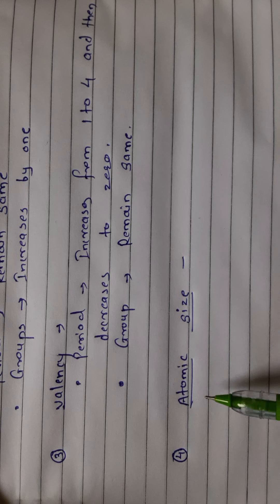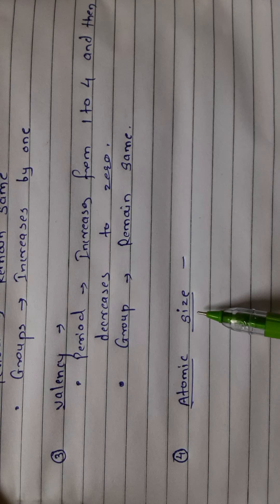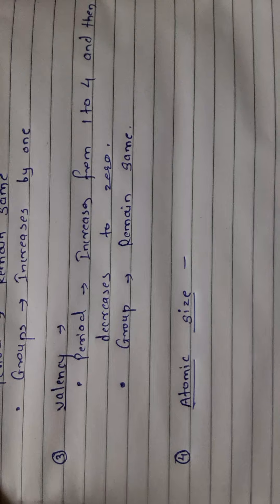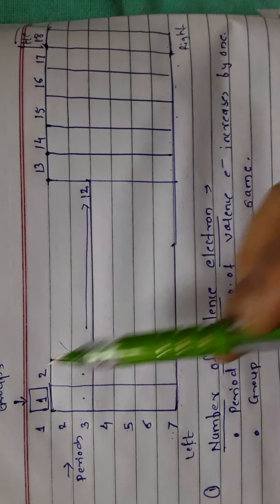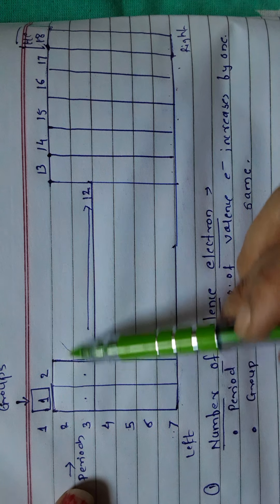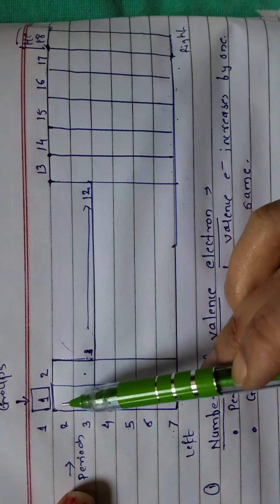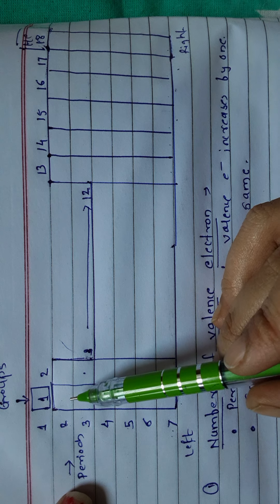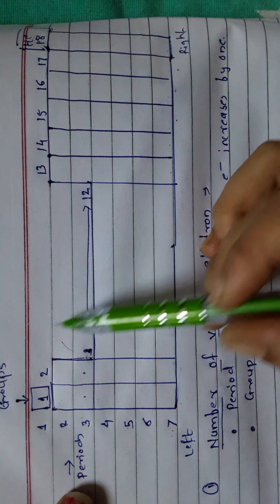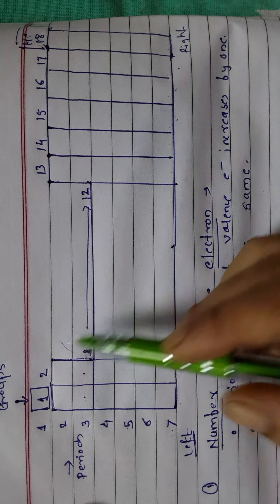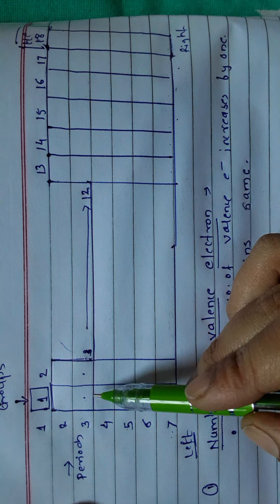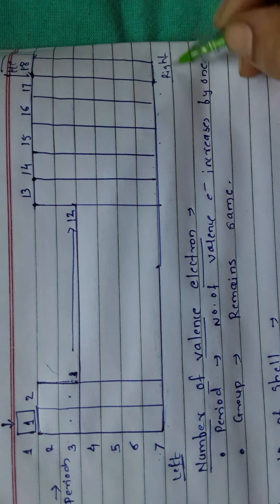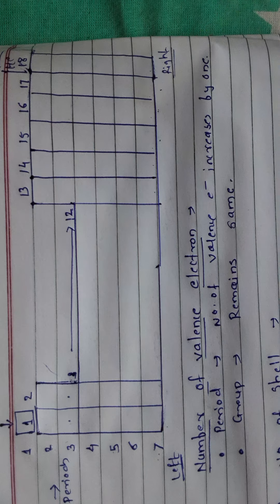Fourth property: atomic size. The atomic size of an element decreases as the atomic number increases. An increase in atomic number means an increase in the number of protons and electrons by one. So the elements present on the extreme left side of the modern periodic table have a bigger size than the elements present on the extreme right side.